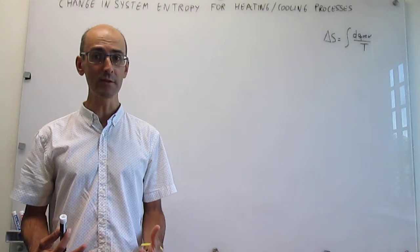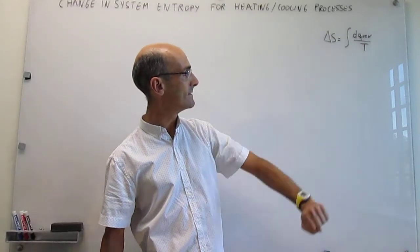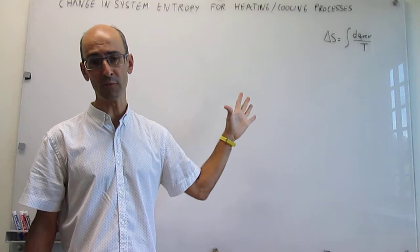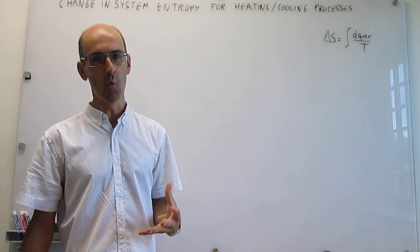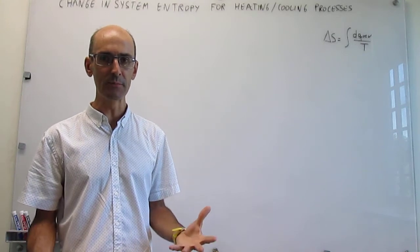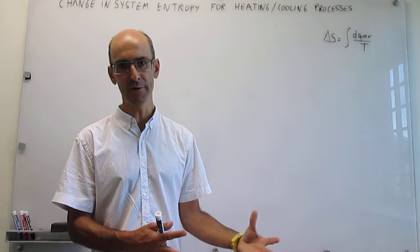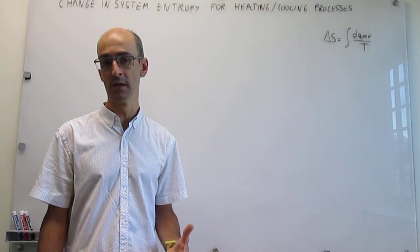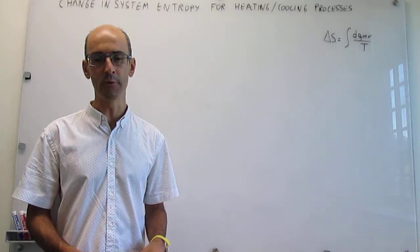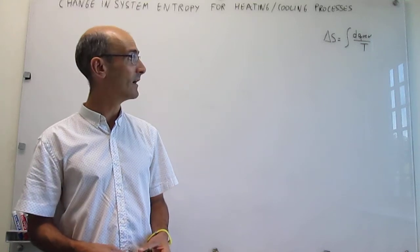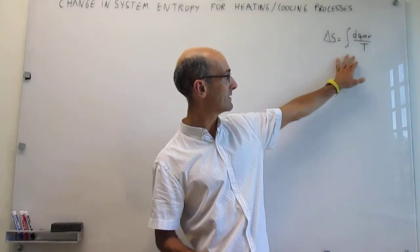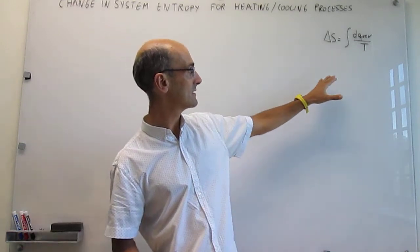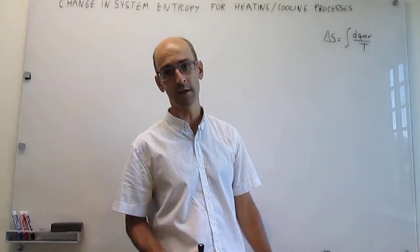Our thermodynamic definition of entropy is what we have right here. Our problem now is that we are trying to see how this transforms into a workable expression when the temperature is changing. For example, imagine that you have a glass of water and you're trying to elevate the temperature from maybe 25°C to 50°C. Right away you see that the temperature is changing, so we're going to have to integrate, because if the temperature is not constant, you cannot factor it out.